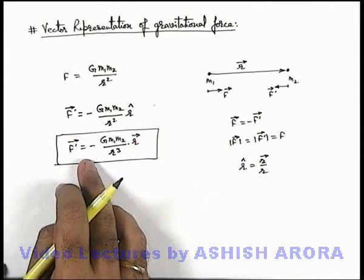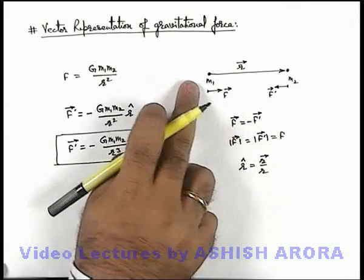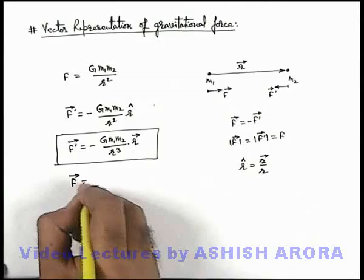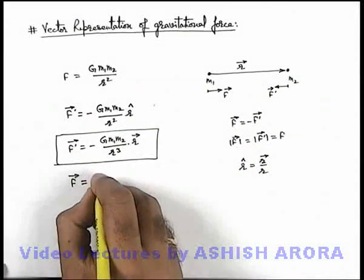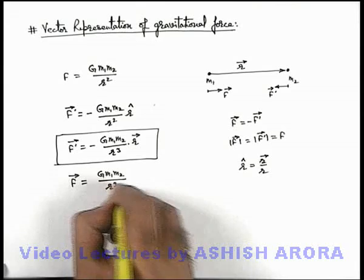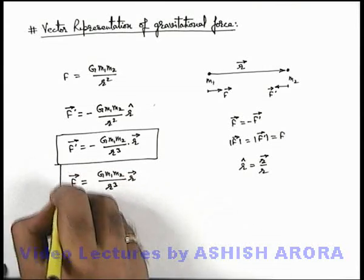And if we wish to write down the force acting on m1, it is written as negative of F dash. So F vector which is applied by m2 on m1 can be written as G m1 m2 by r cube, r vector. This is the way how we write.